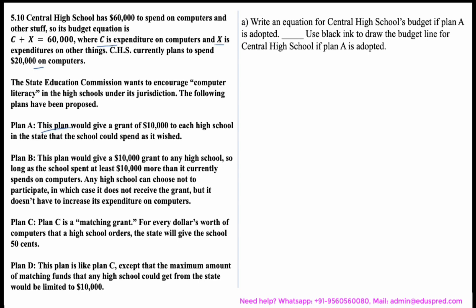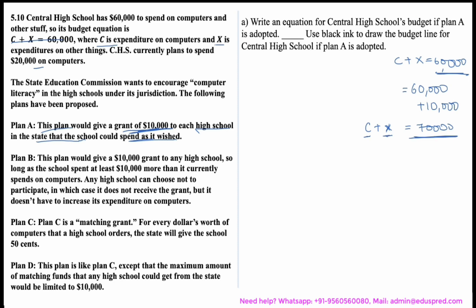The first part asks us to write an equation for Central High School's budget if Plan A is adopted and to draw the budget line. Initially the budget line was c plus x equals 60,000. Under Plan A, the school receives a $10,000 grant it can spend as it wishes, so the total becomes $70,000. The new budget equation is c plus x equals 70,000.